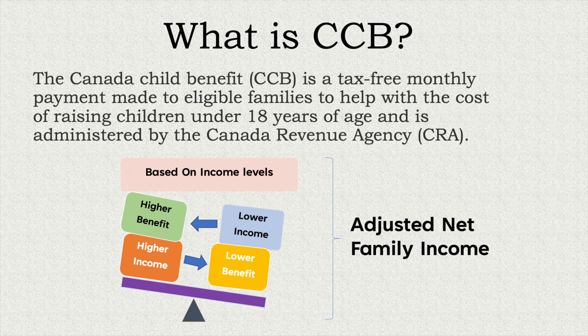This is called adjusted net family income. The CRA basically calculates the net family income, which means you and your spouse's income put together, and that total amount is used to determine the eligibility of your benefit amount. That is why it is very important that you file your taxes every year. Whether you have an income or you don't, please do file your taxes if you want to continue getting these benefits.